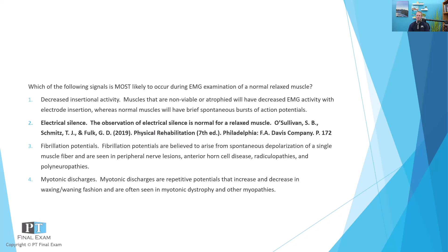So there's your question for today. EMG examination of a normal relaxed muscle will likely result in electrical silence. Fibrillation potentials are typically not visible — this is spontaneous depolarization of a single muscle fiber, related to polyneuropathies and anterior horn cells. Myotonic discharges usually occur with myotonic dystrophy or other myopathies. Insertional activity simply indicates the increased EMG activity that occurs as you insert the intramuscular electrode, creating an increase in EMG activity as the muscle detects that insertion.